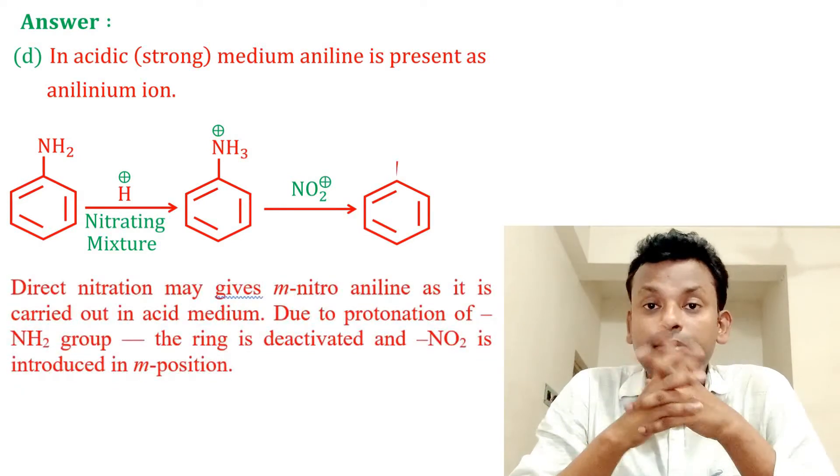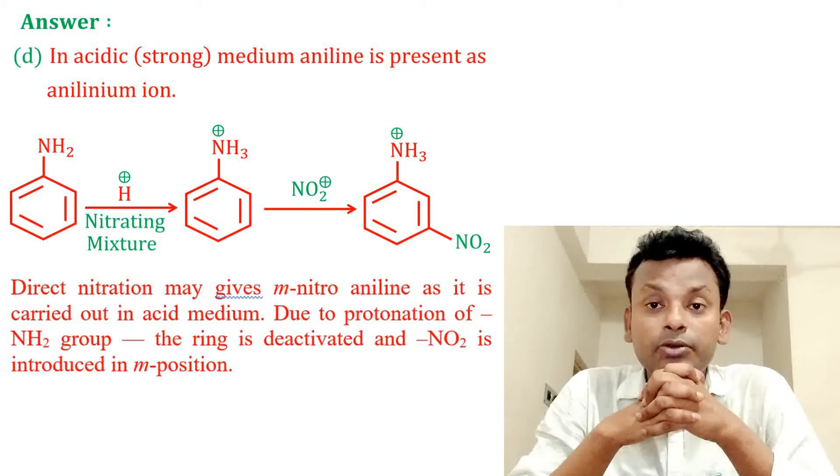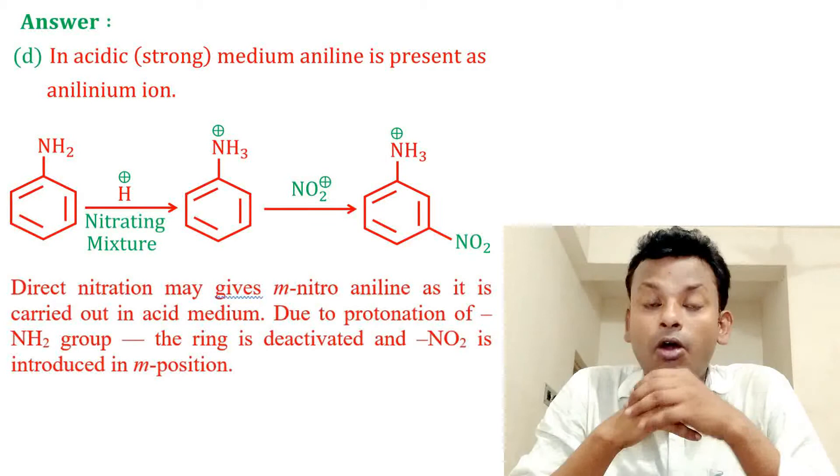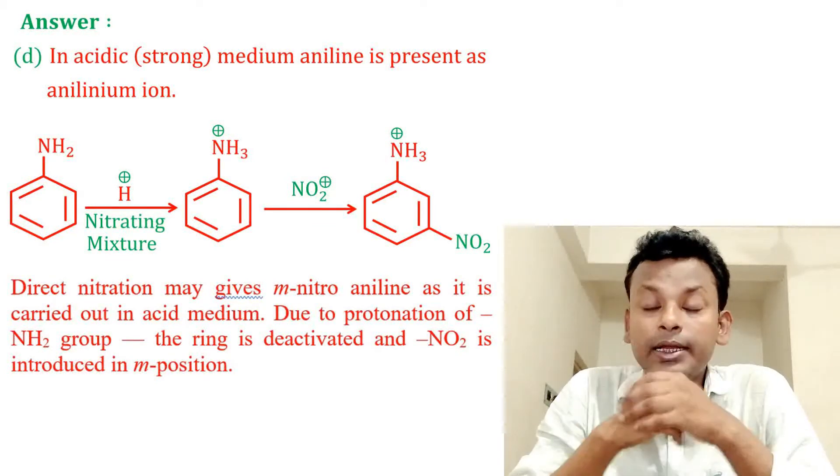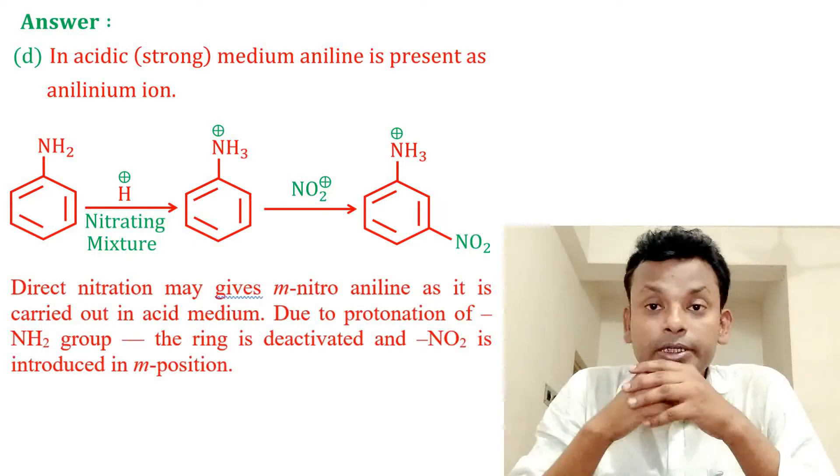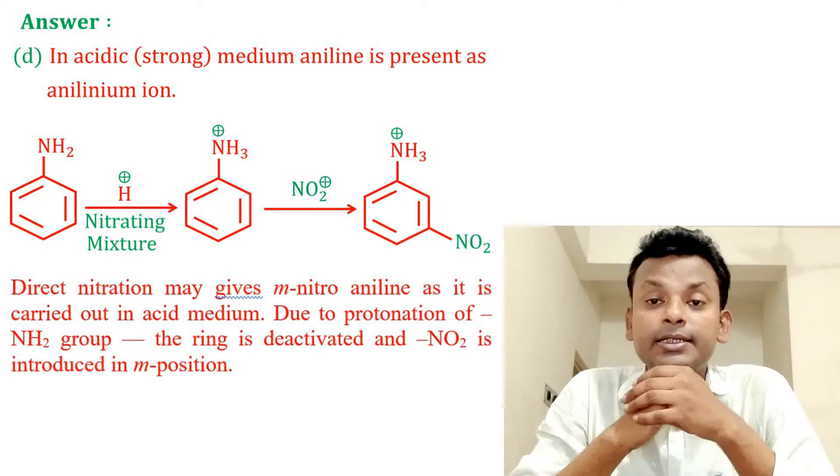Direct nitration may give meta nitroaniline as it is carried out in acidic medium. Due to protonation of NH2 group, the ring is deactivated and NO2 is introduced in meta position. So option D is correct answer.